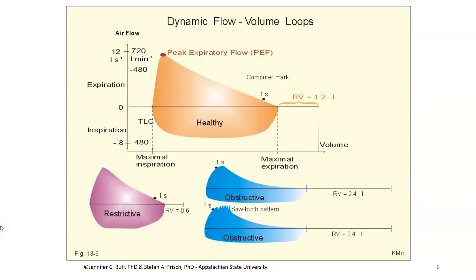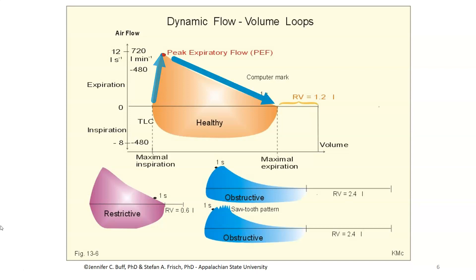Flow-volume loops, as portrayed in this particular text, tend to look like this. We start with a maximum inspiration as our starting point, then exhale air as quickly as possible. Typically, that exhalation ramps up in terms of volume very quickly, and then the volume that gets moved decreases steadily over time until you reach that maximum expiration point — until you've moved your full vital capacity.